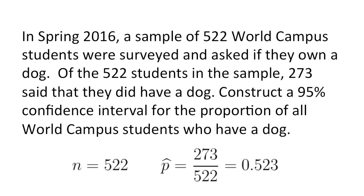In this scenario, we're given that n equals 522. We can compute p hat, the sample proportion, by dividing 273 by 522. Our sample proportion is 0.523.